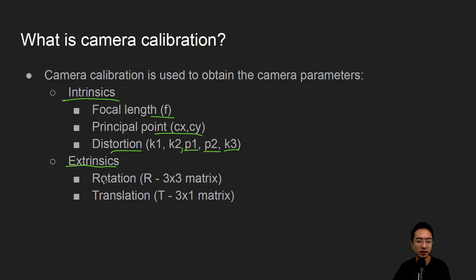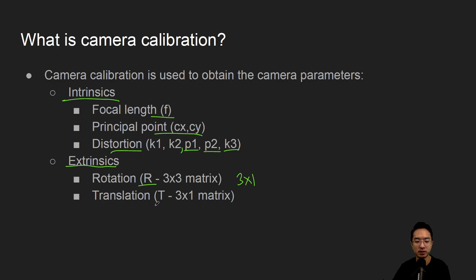For the extrinsic parameters, you have the rotation matrix — typically a 3x3, but OpenCV has a 3x1 implementation — and then you have a translation, which is a 3x1 matrix.